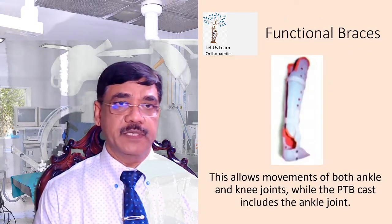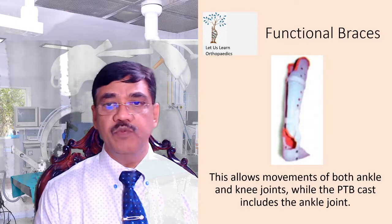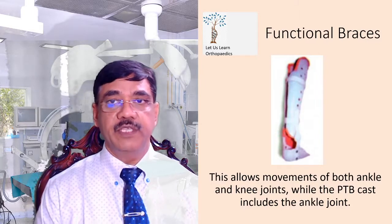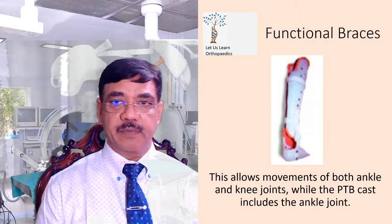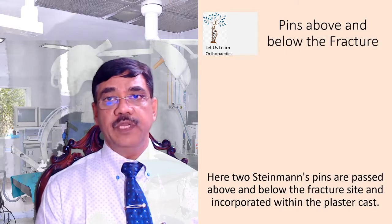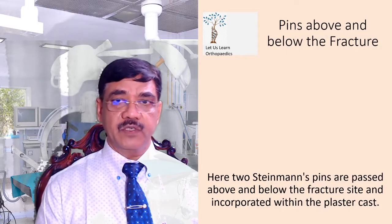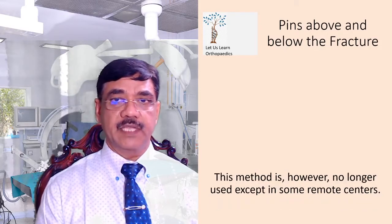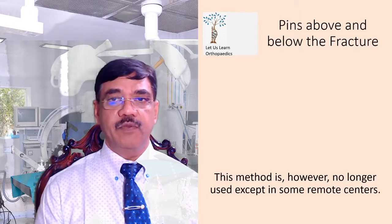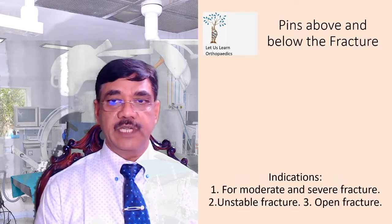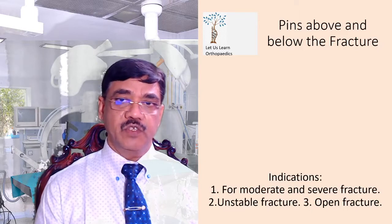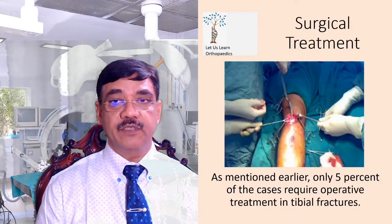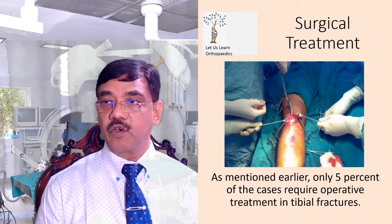The functional cast brace allows movements of both ankle and knee joint, while the PTB cast includes the ankle joint. Nowadays, people are also using the functional cast brace. Another method is pin above and below the fractures, where two Steinmann pins are passed above and below the fracture site and incorporated in the plaster cast. This method is no longer in use except in some remote centers; indications were for moderate and severe fractures, unstable fractures, and open fractures.